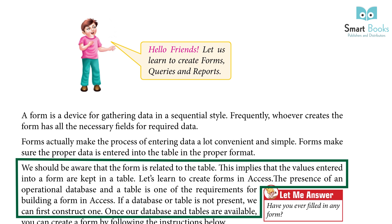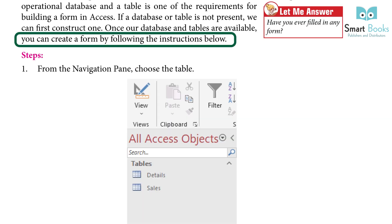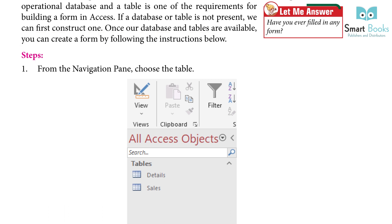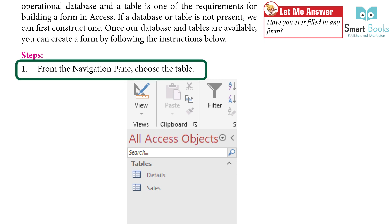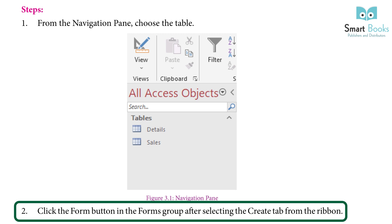To create a form in Access, the presence of an operational database and table is required. If a database or table is not present, we can first construct one. Once our database and tables are available, you can create a form by following these steps. Step 1: From the navigation pane, choose the table. Step 2: Click the Form button in the Form group after selecting the Create tab from the ribbon.